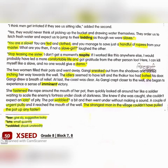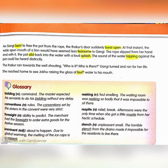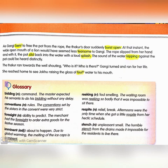As Gangi went to free the pot from the rope, the Thakur's door suddenly burst open. At that instant, the wide-open mouth of a lion would have seemed less fearsome to Gangi. She was so scared that the rope slipped from her hand and the pot slipped back into the water with a loud splash. The sound of the water lapping against the pot could be heard distinctly. The Thakur ran towards the well shouting, 'Who is it? Who is there?' Gangi turned and ran for her life.